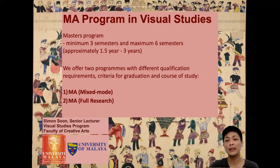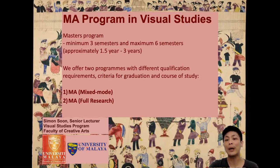In this video, we will be focusing on the two MA programs here in Visual Studies that we offer. The duration of our MA program ranges from a minimum of three semesters to a maximum of six semesters, which translates to a course of study lasting from one and a half years to up to three years. How quickly you finish really depends on how much time you put into the program. We have two programs with different qualification requirements, criteria for graduation, and course of study.